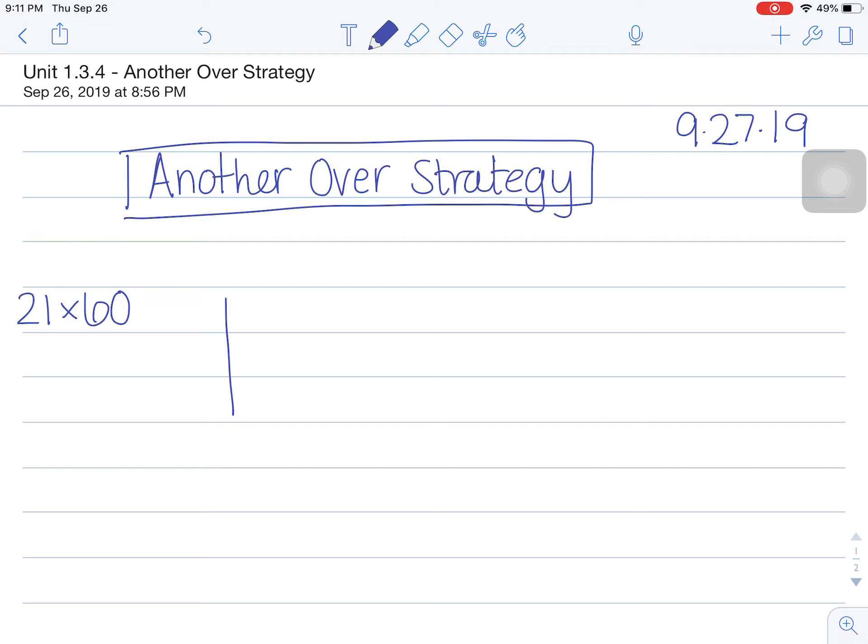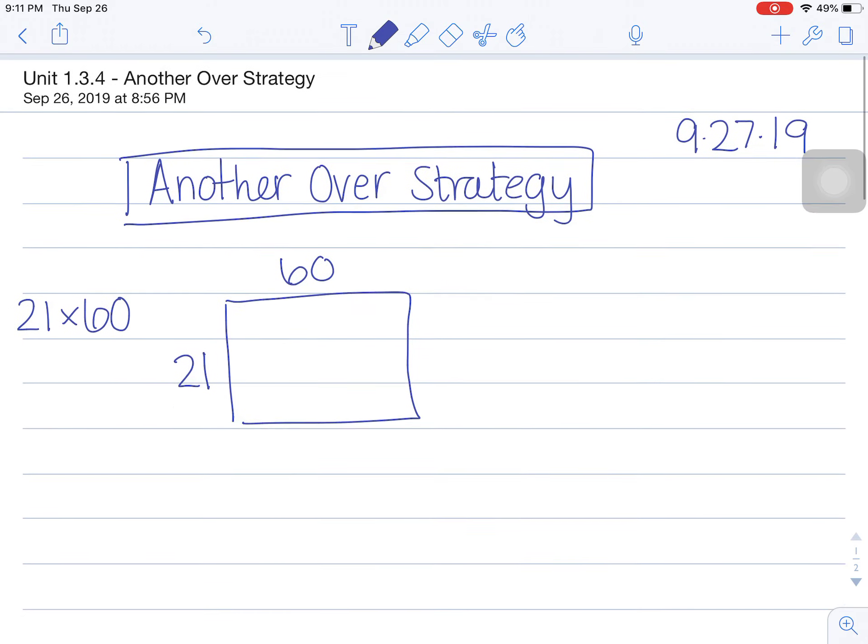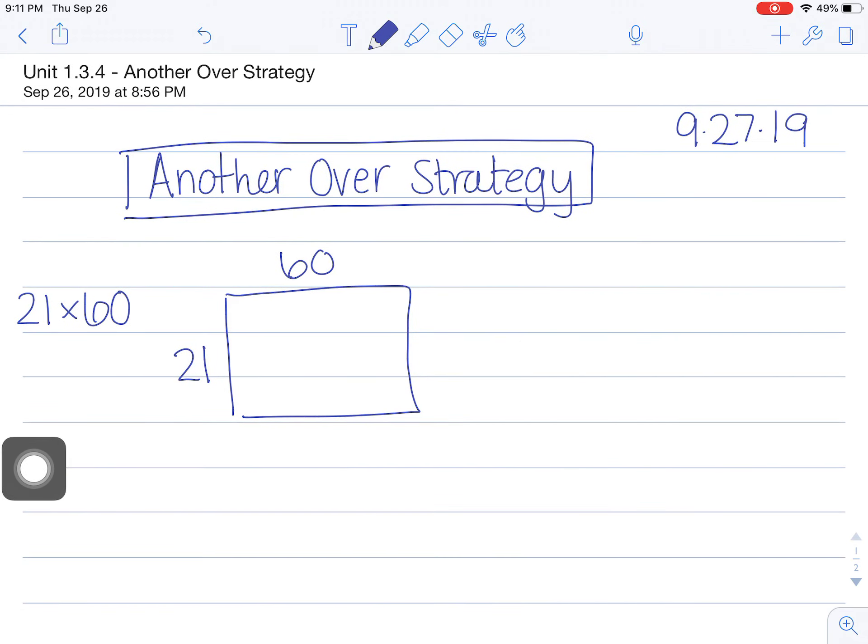So I will start with my array for 21 times 60. Now off to the side over here on the right, I'm going to write a numerical expression to represent my thinking. If I want to solve 21 times 60, I'm going to solve what I know first: 20 times 60. Looking at 20 times 60, I know my basic facts here are 2 times 6, and 20 times 6 tens, or 60, I know the answer to.